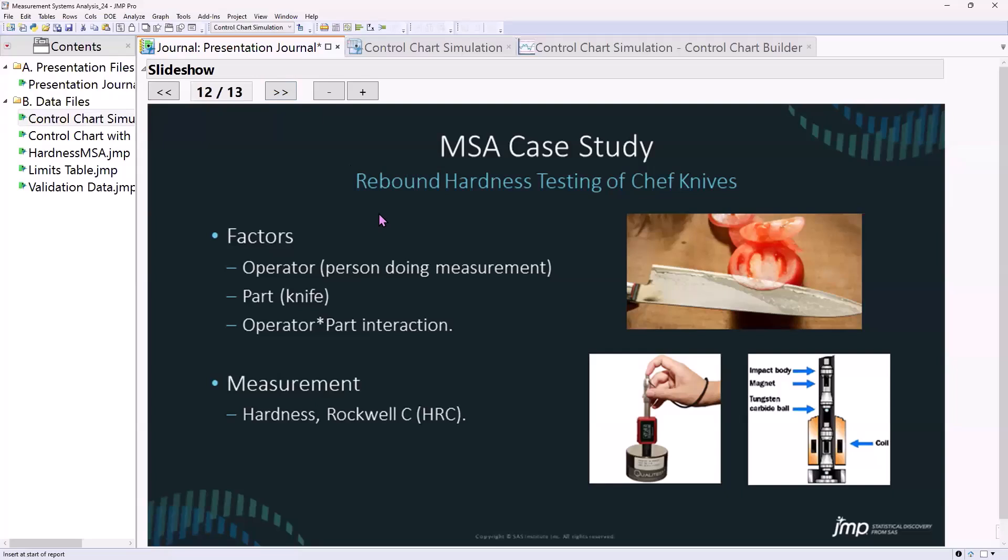In our experiment, we have to consider the entire process. It isn't just the measurement system itself that we're looking at. It's the entire process. So when I'm doing a rebound hardness test, there's an operator or a person involved in it. And I better have more than one knife in there so I can assess the repeatability and reproducibility of the measurement system as well.